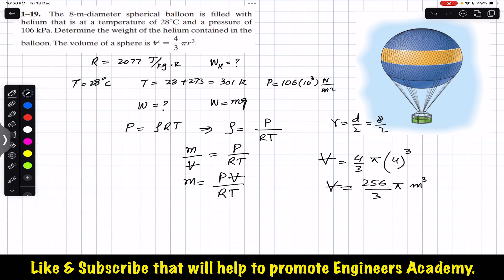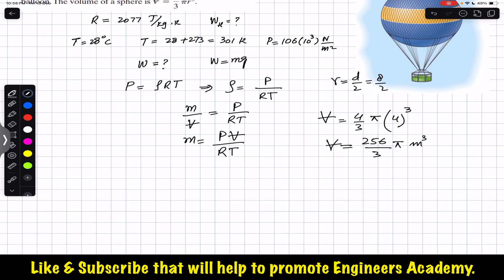So now putting this volume in this equation, we will find the mass of the helium. So mass of the helium: pressure is 106 × 10³, volume is (256/3)π, divided by the gas constant which is 2077 into T, so T is 301.